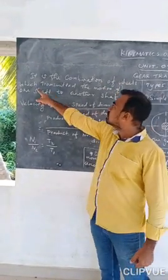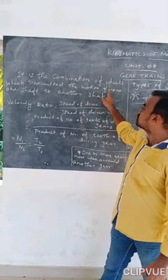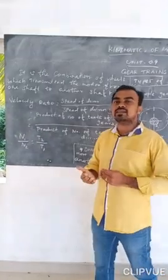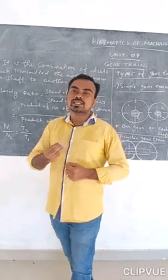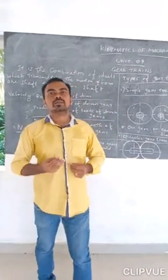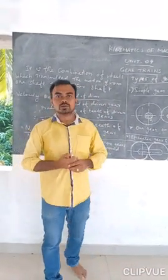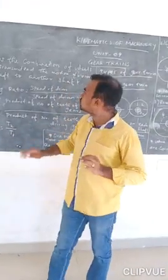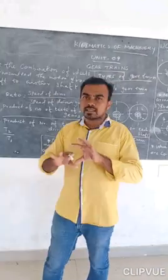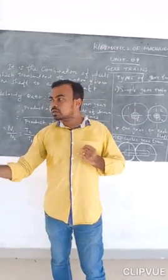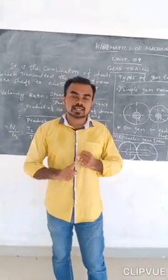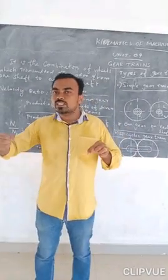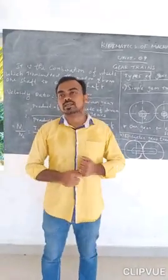It is a combination of gears which transmits motion from one shaft to another shaft. One shaft has motion transmitted through the gear element. Gear train is set up — a normal example we have is a gear box. That gear arrangement is a gear train.